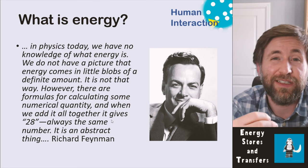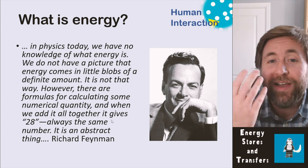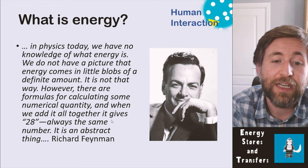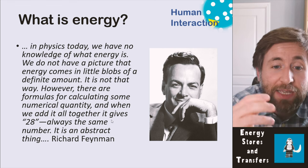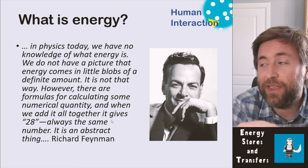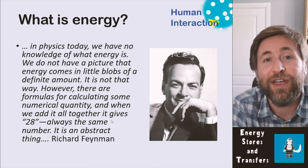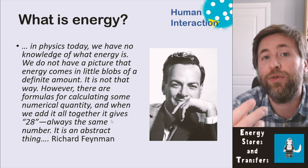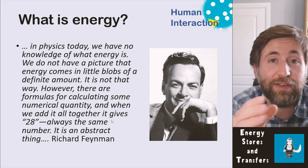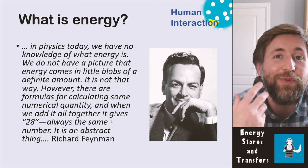Feynman explained: we don't have a picture that energy comes in little blobs of a definite amount — it's not that way. However, there are some formulas for calculating some numerical quantity, and when we add it all together it always gives 28 — it always gives the same number. It's an abstract thing. Energy doesn't come in a fundamental piece; it's not like coins which come in certain values. It's not a physical thing, but it is something we can calculate.